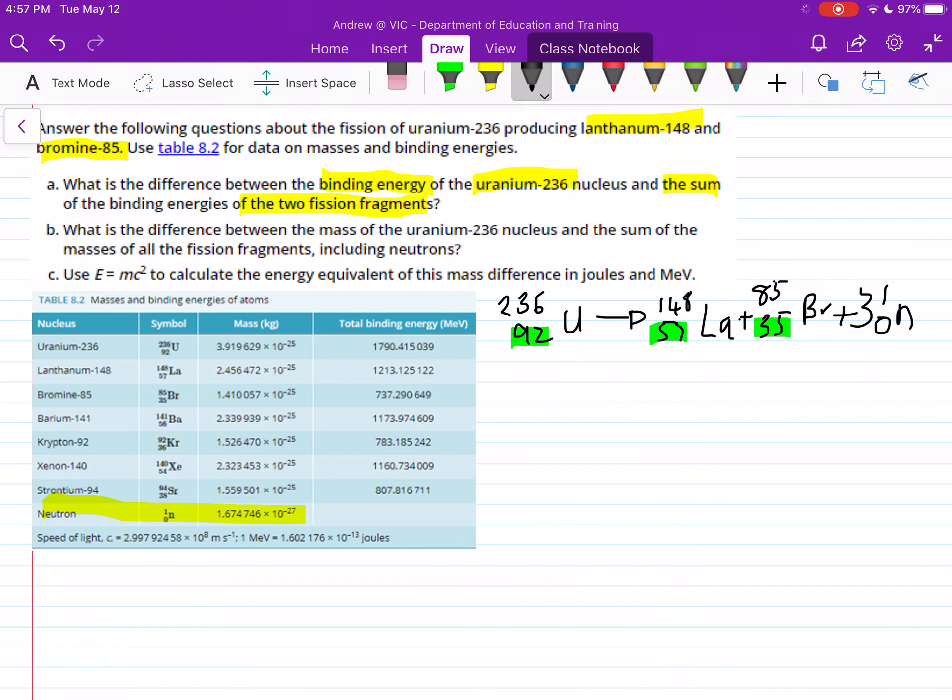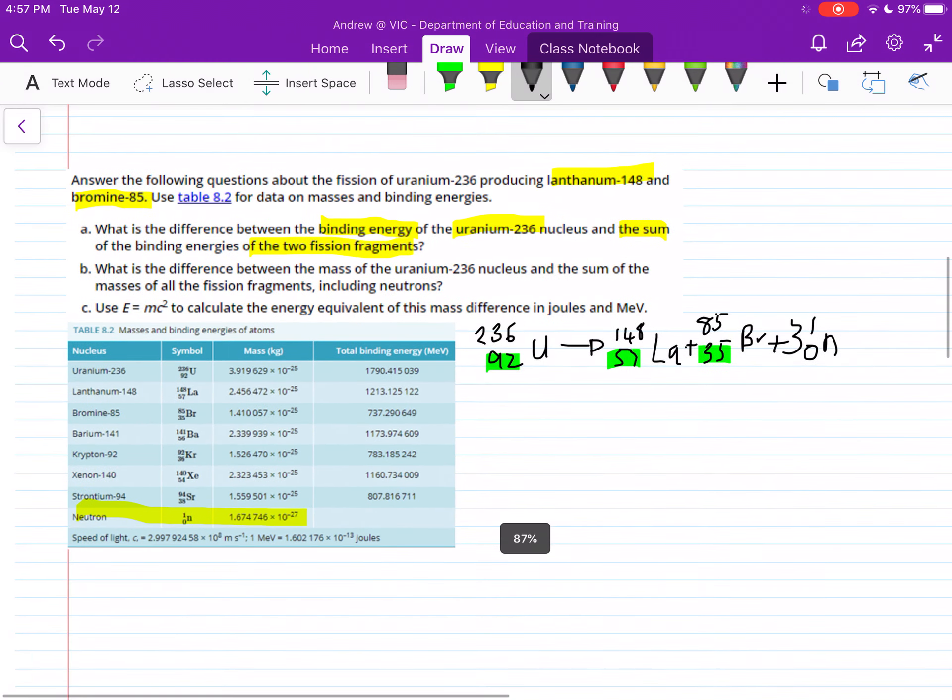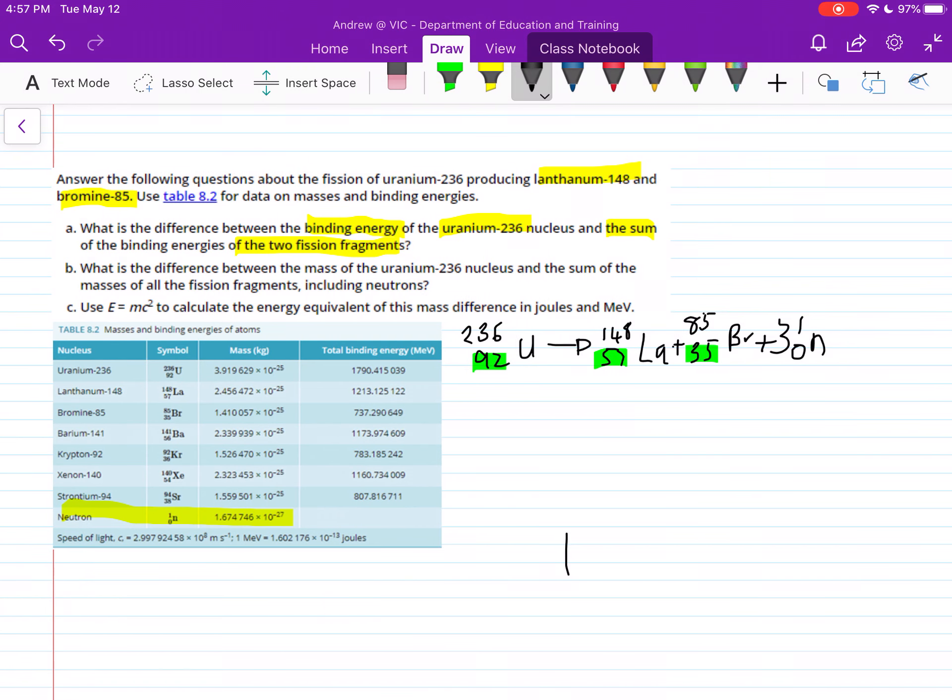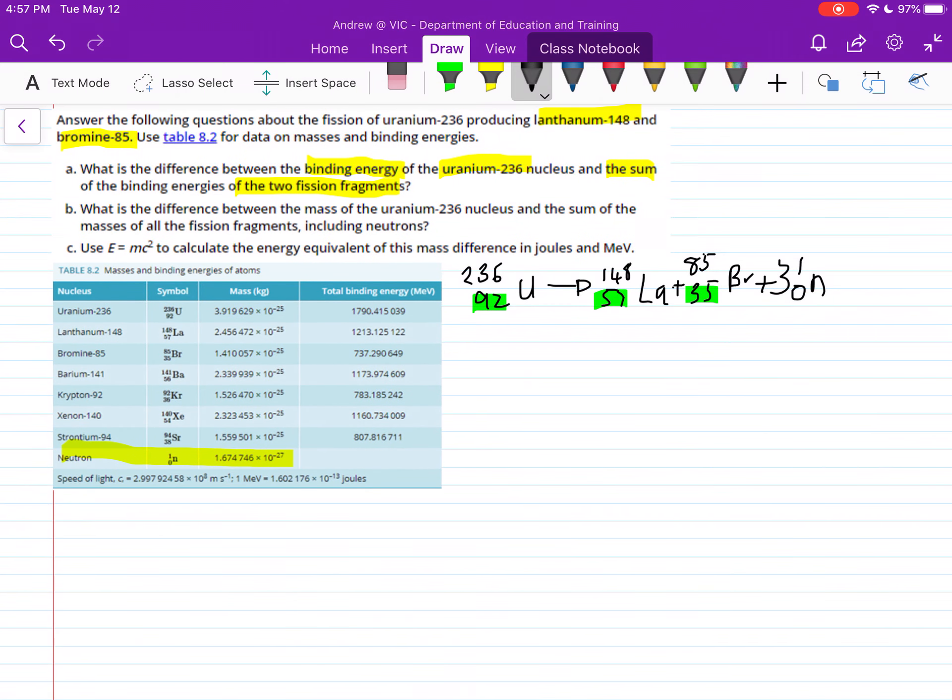I'm just going to zoom out a little because I haven't left myself enough room. And then we need to add always our energy. Remember, there's always energy left over. So that's how you write out the equation.